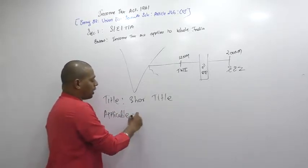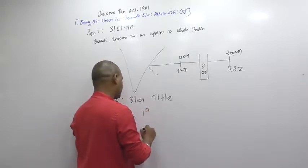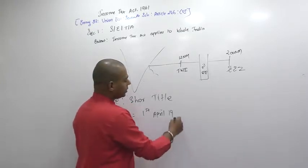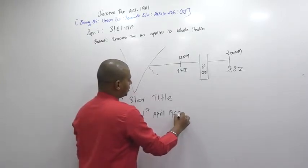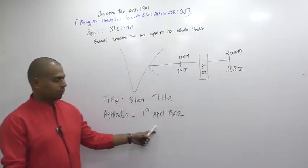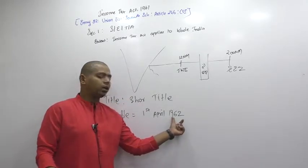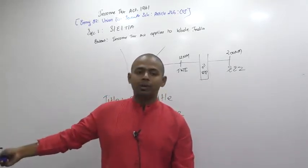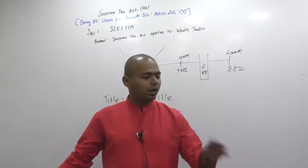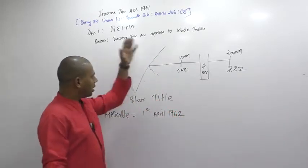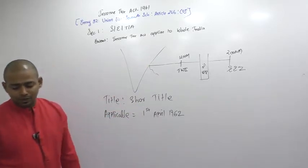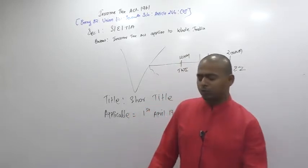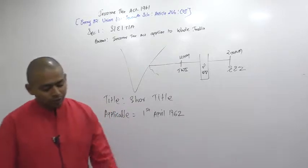Income tax became applicable from 1st April 1962, not 1961 — because income tax gets applicable in the assessment year, not the previous year. There is a concept of assessment year and previous year: you earn in the previous year and pay tax in the assessment year. Write this down — at least one section learned today, so your Sunday is not wasted.